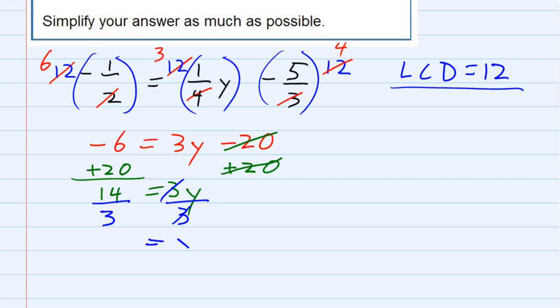Now on the right-hand side, I just have y. On the left-hand side, I've got the 14 thirds. And I can use that, or I can list it as a mixed number. Three goes into 14 four times with a remainder of two. So four and two-thirds. Or you can use the 14 thirds either way.